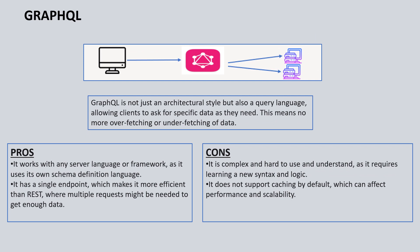The third pattern is GraphQL. GraphQL is not just an architectural pattern or style, but also a query language. As a developer, you must have felt that for whatever data you need to show or require for your application, you need to do multiple calls because sometimes you are overfetching data or sometimes underfetching. GraphQL solves those overfetching and underfetching issues — it gives you exactly the data you need, which is why it's also a query language.